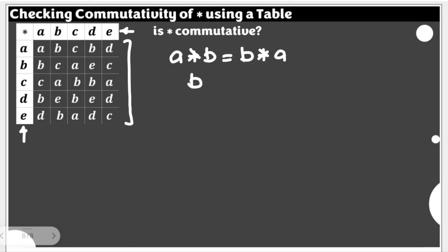On the other side, b times a - you have b times a, the intersection is also b. So with this Cayley table, we can say that this is b as well. Since we have the same, we can say that a star b is equal to b star a.